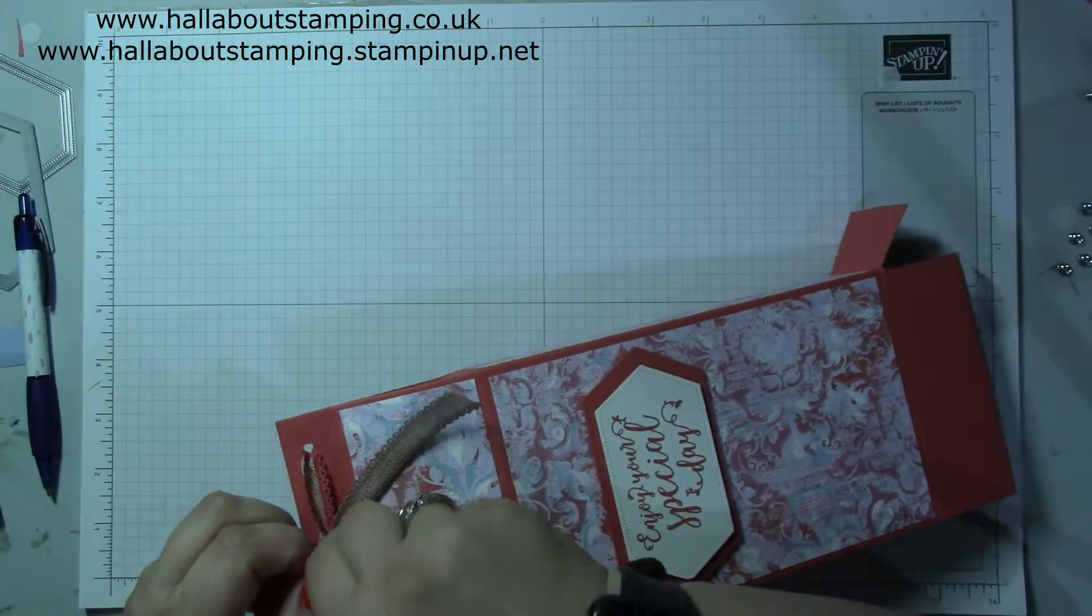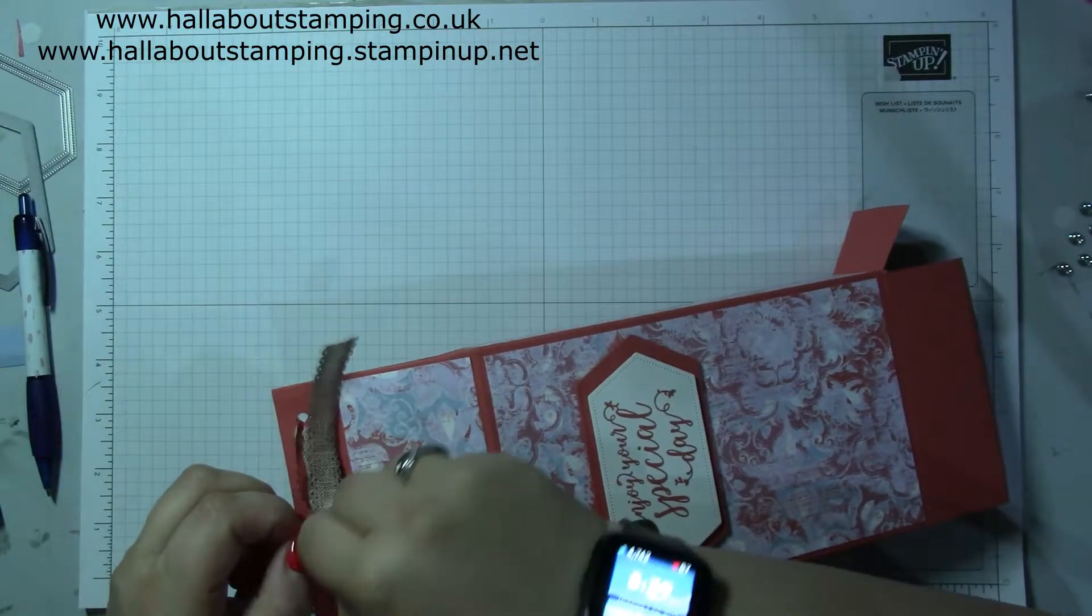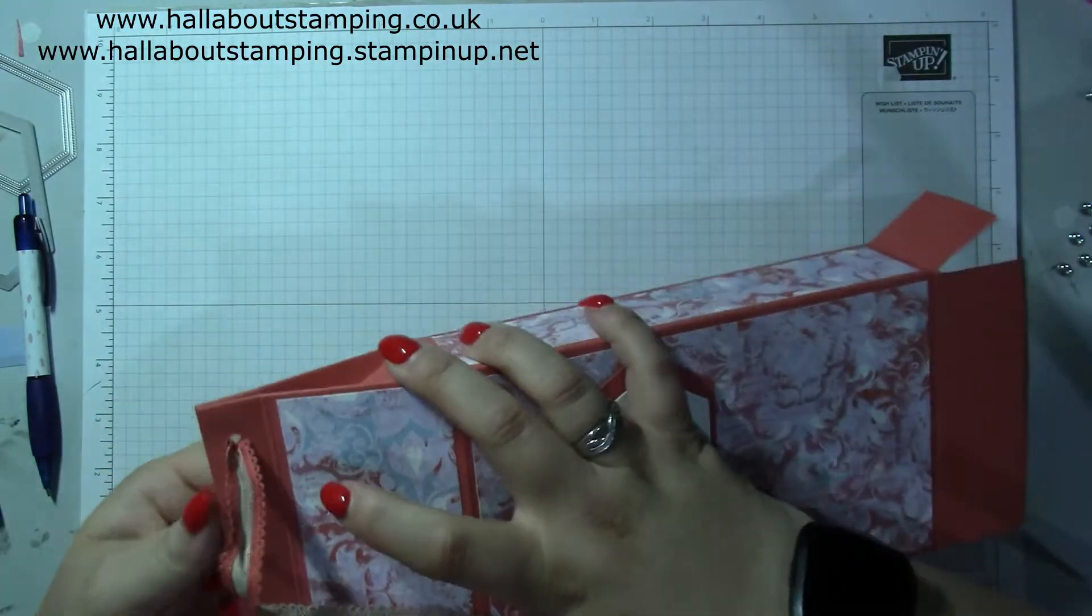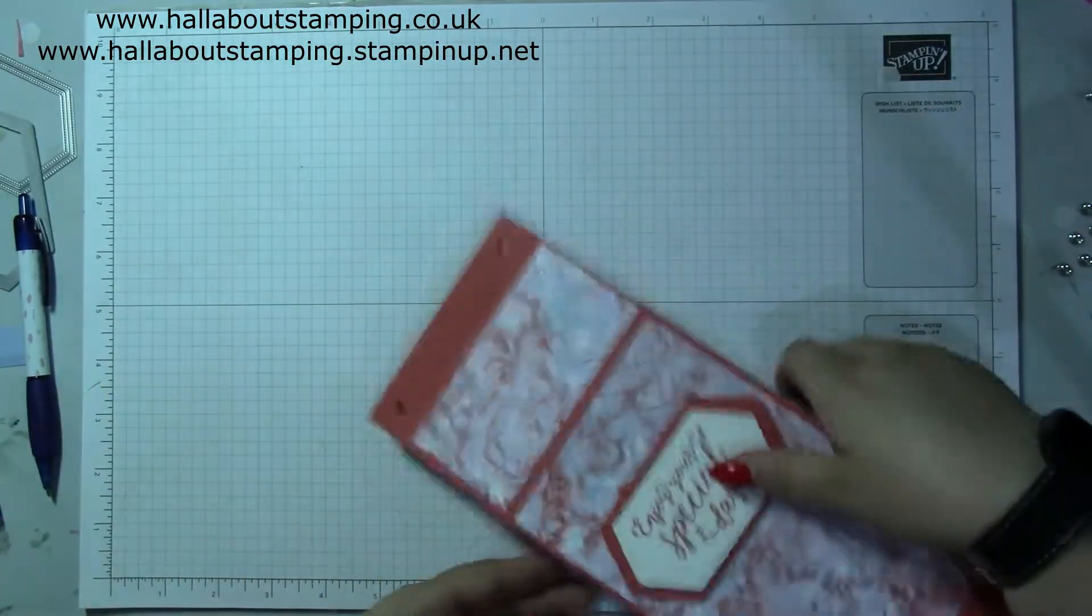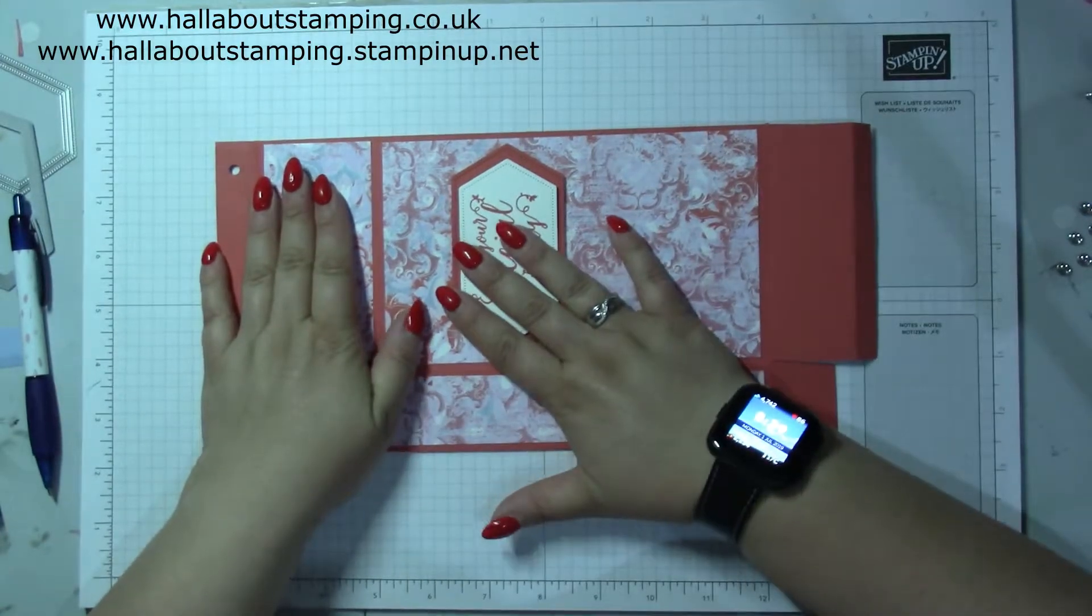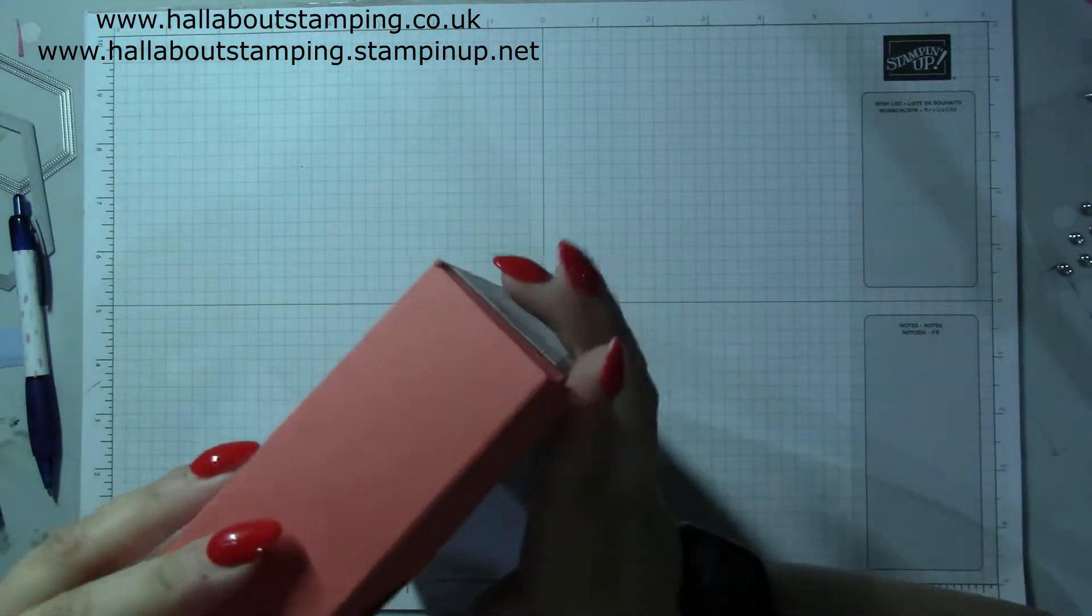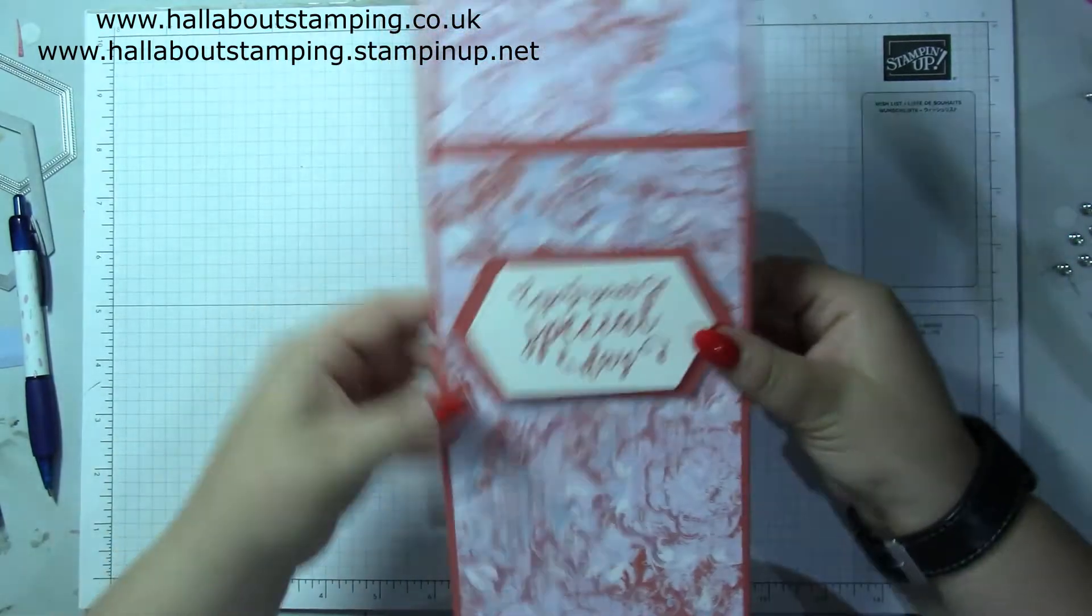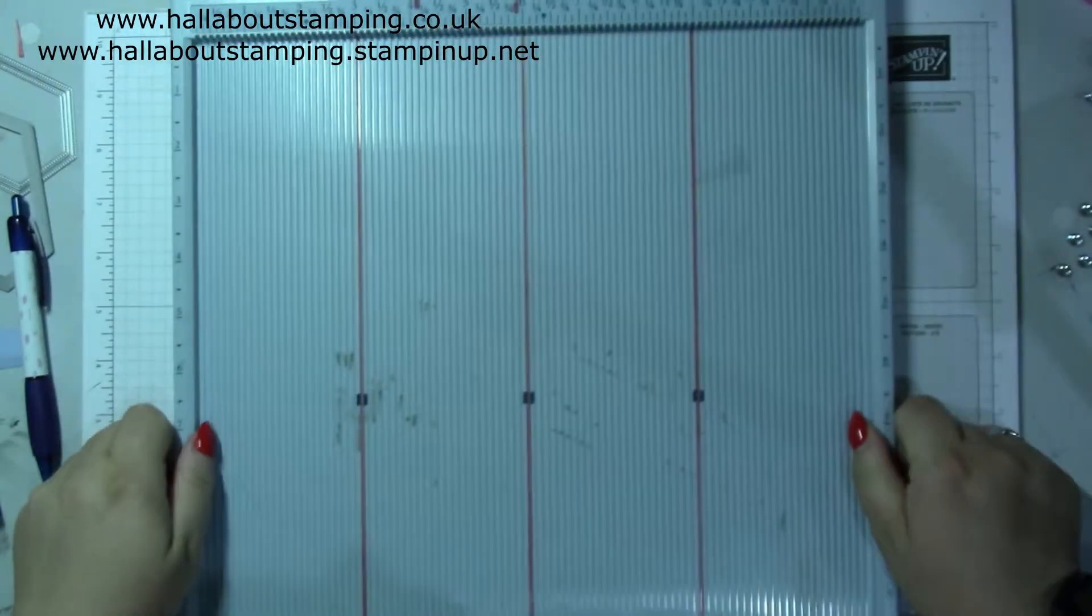I wanted a big box and this actually uses a piece of 12 by 12 cardstock and the new in colors. This one is terracotta tile and the one I'm going to do next is seaside spray. It's using all the ribbon and it folds flat so you can store it like that, get all the decoration on, and then when you need it you can pop it back together.